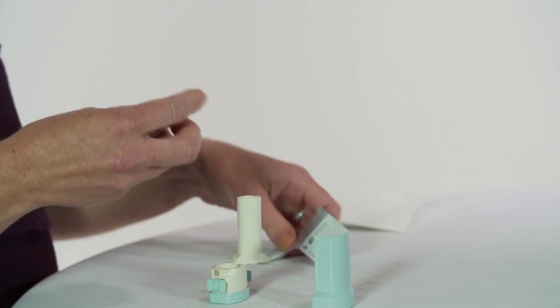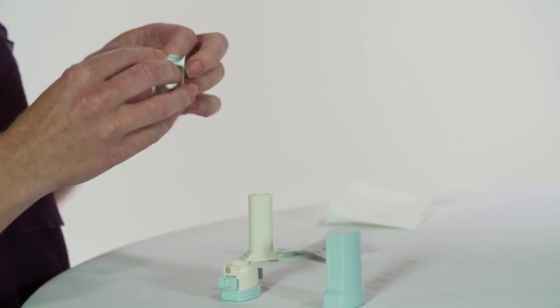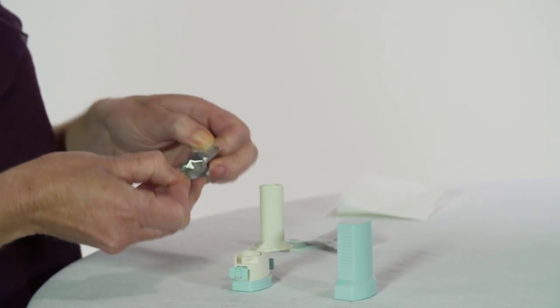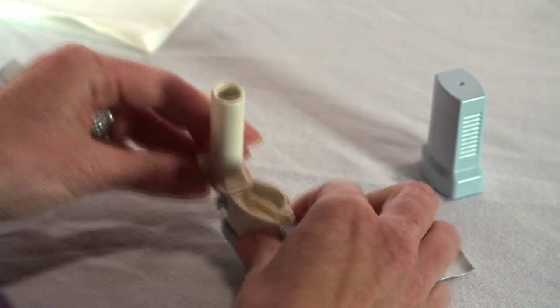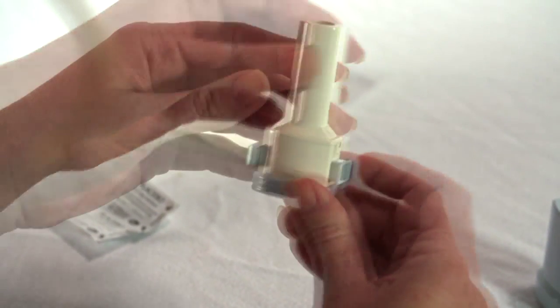Remove a capsule from the blister pack. Place the capsule into the base of the inhaler. Twist the mouthpiece closed until it clicks.